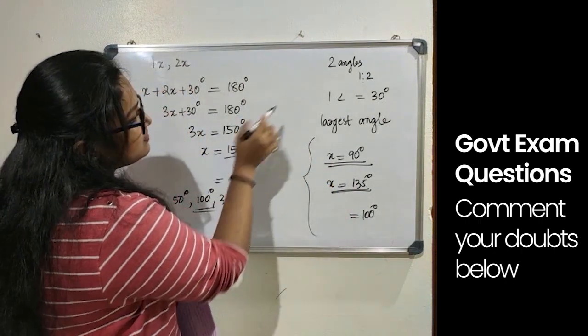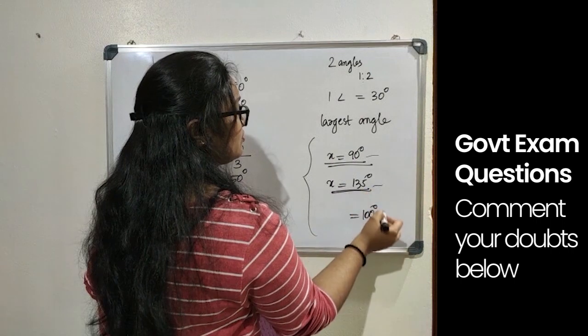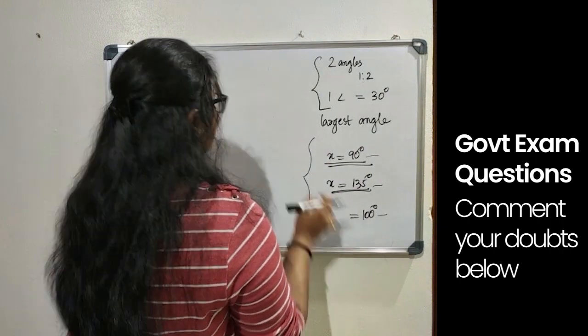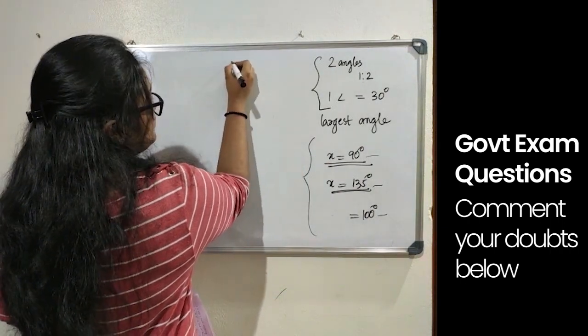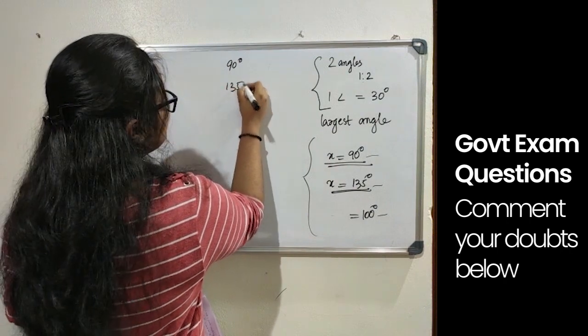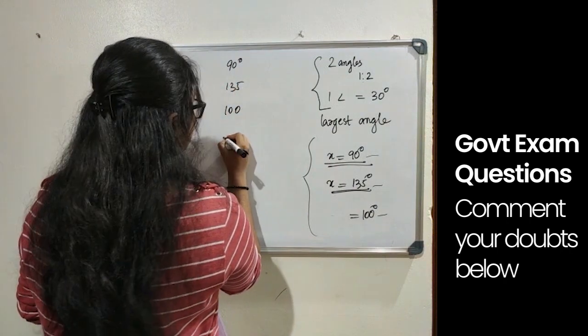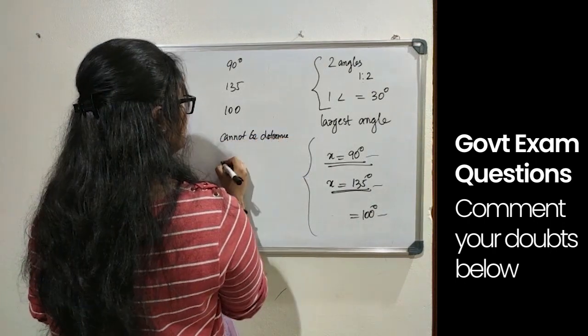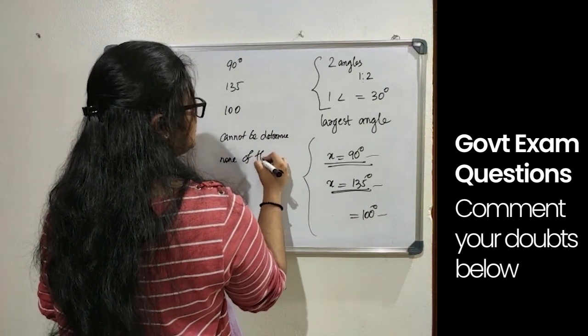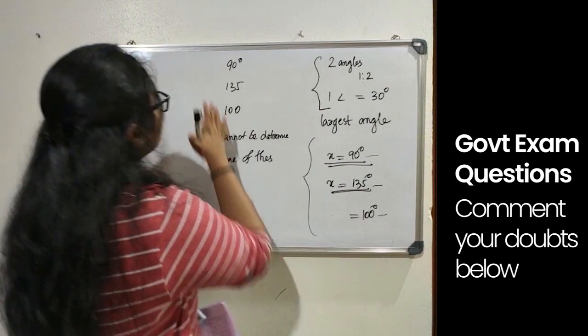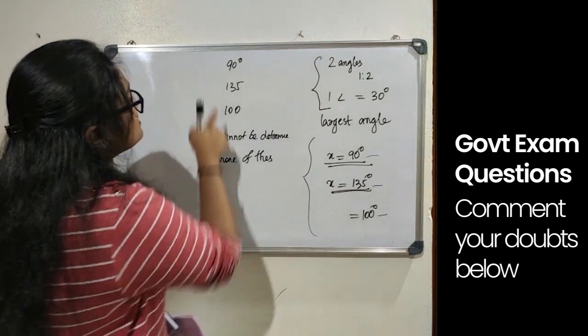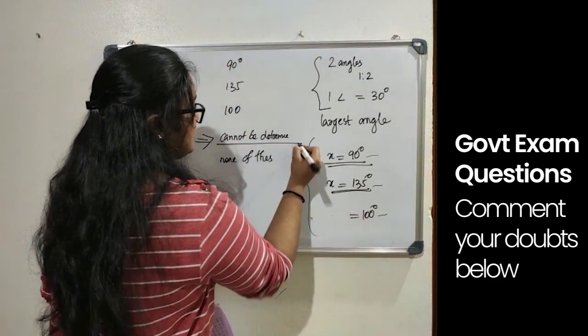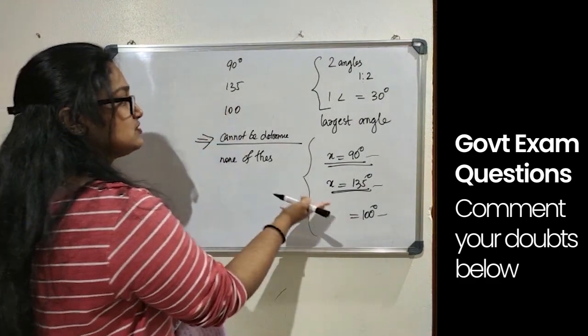Solving this question in different ways, we get the value. And when this question was asked, all these three options were given separately as different options. One option was 90 degree, next was 135, next was 100, fourth option was cannot be determined and last was none of this. When such questions come, we have to choose based on the options given. Since all these three answers were given as separate options, for this question, we have to go with cannot be determined. Otherwise, based on the option, choose the answer.